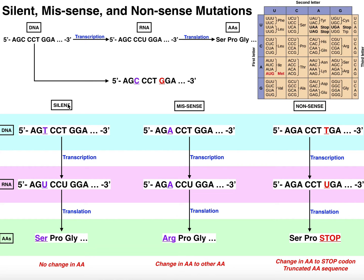Let's do what's called a silent mutation first. I'm going to mutate the cytosine into a thymine. So now my DNA sequence is AGT, CCT, GGA, and it would go on. Transcribing this into RNA — the mRNA is the same except thymines become uracils — so AGT becomes AGU, CCT becomes CCU, and then GGA. The second and third codons are the same as before, so those are still proline and glycine.